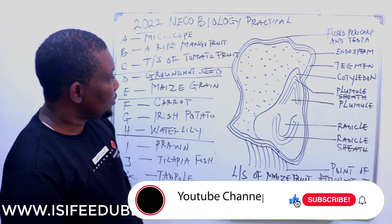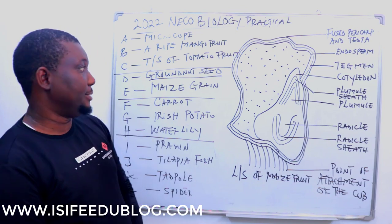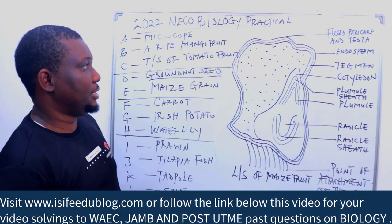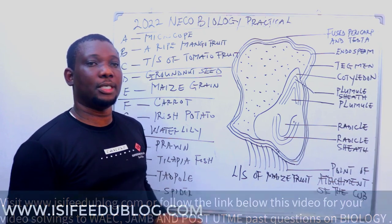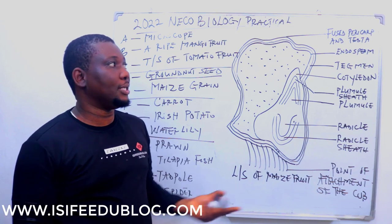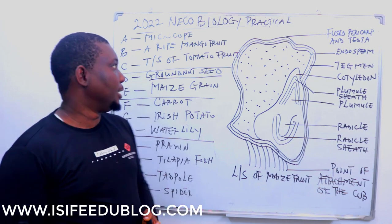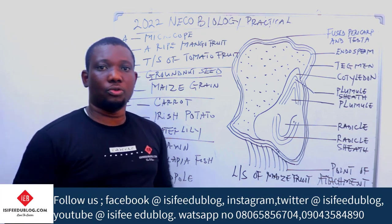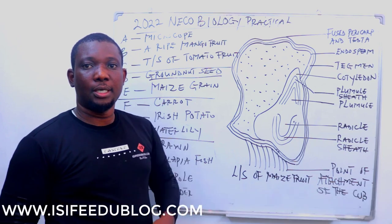Let me start with the type of seed. This one is not a fruit — it's a seed. Being that it is a seed, the walls are not like the pericarp walls of fruits. The seed walls are the testa — the fused pericarp and testa is what forms the seed walls. Groundnut seed can split into two halves.